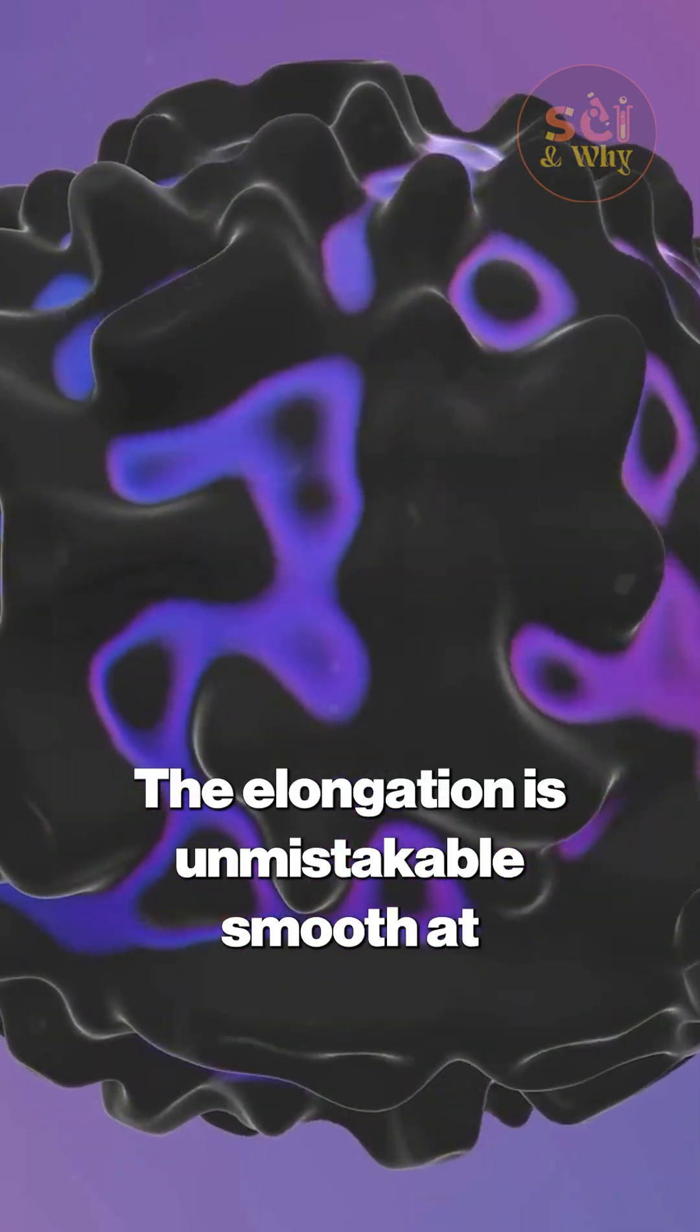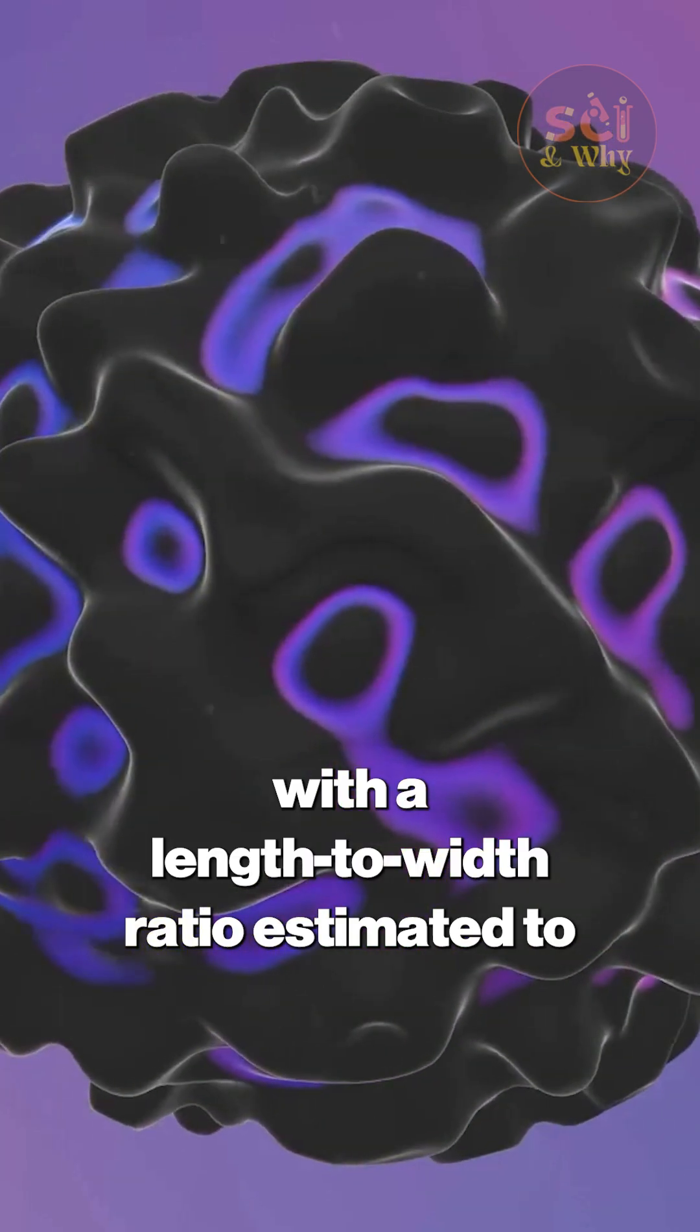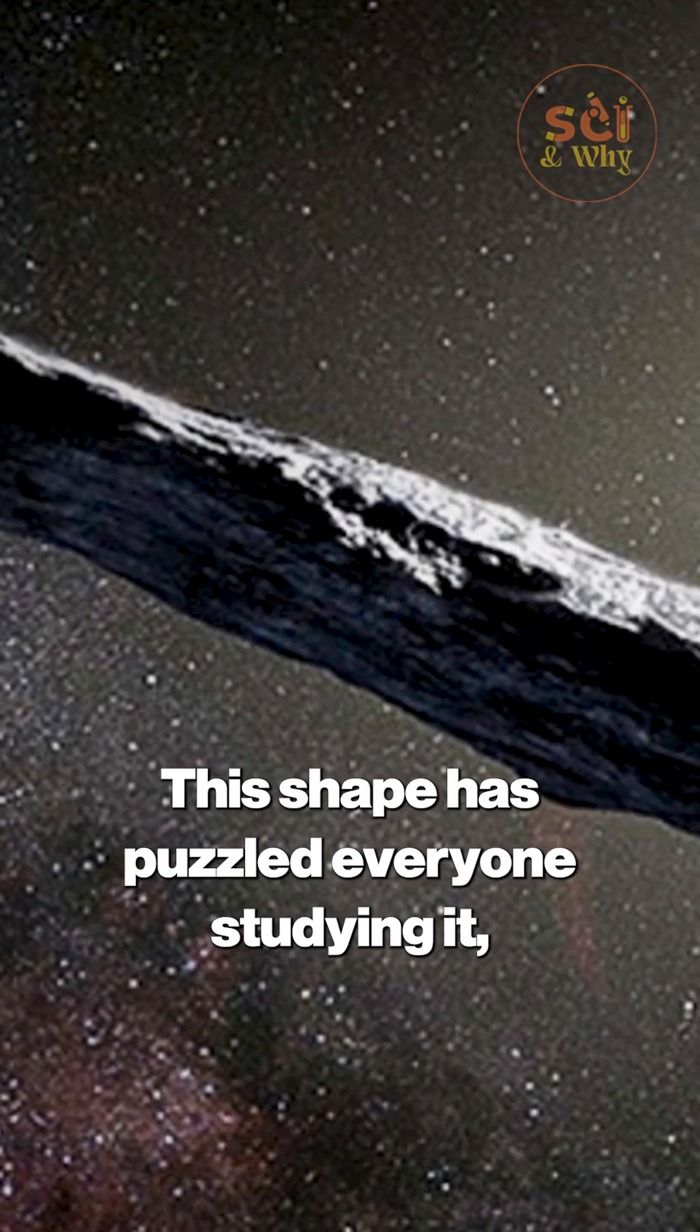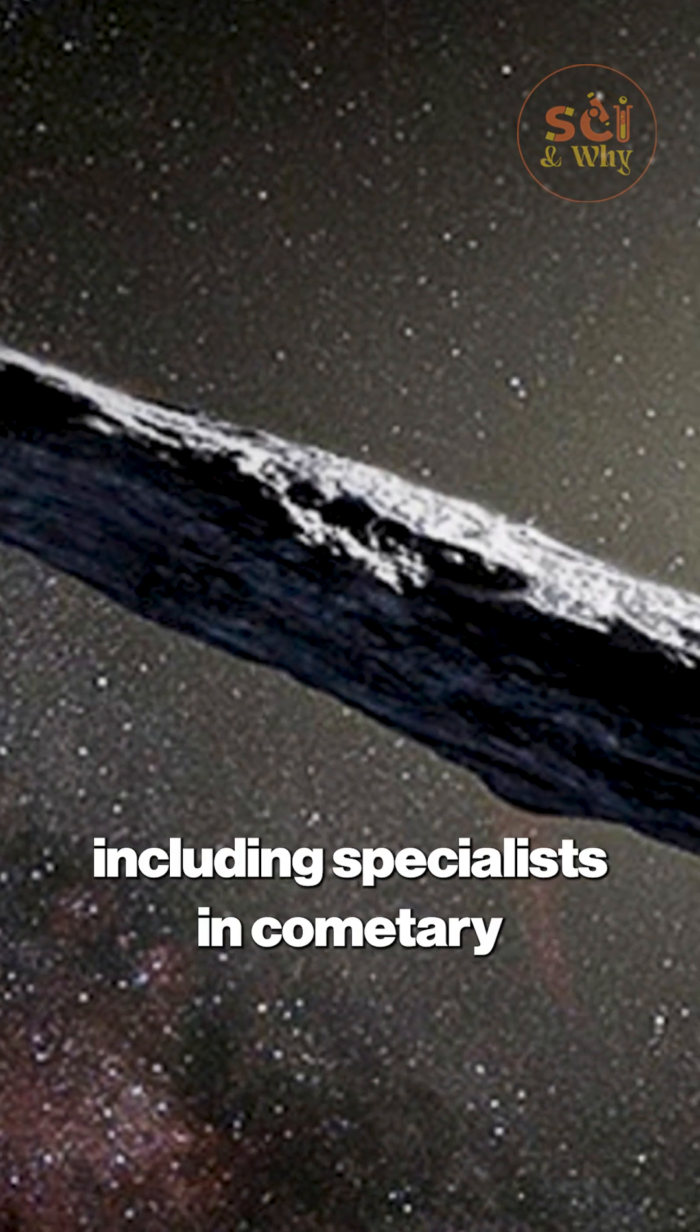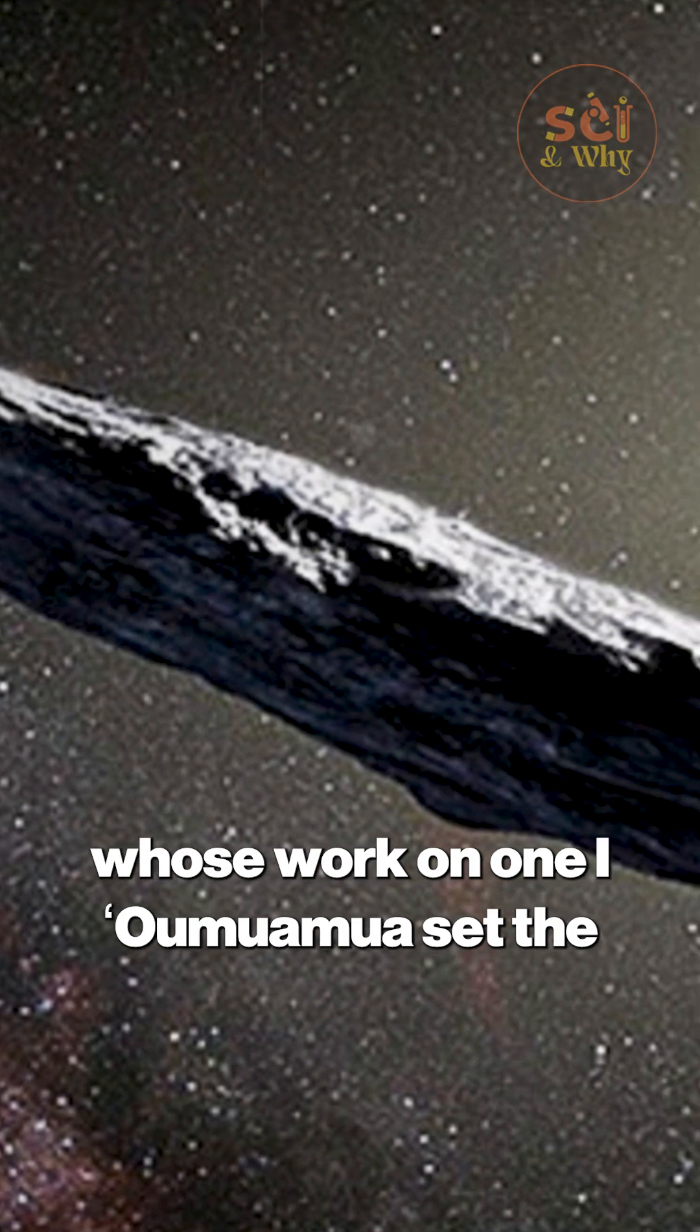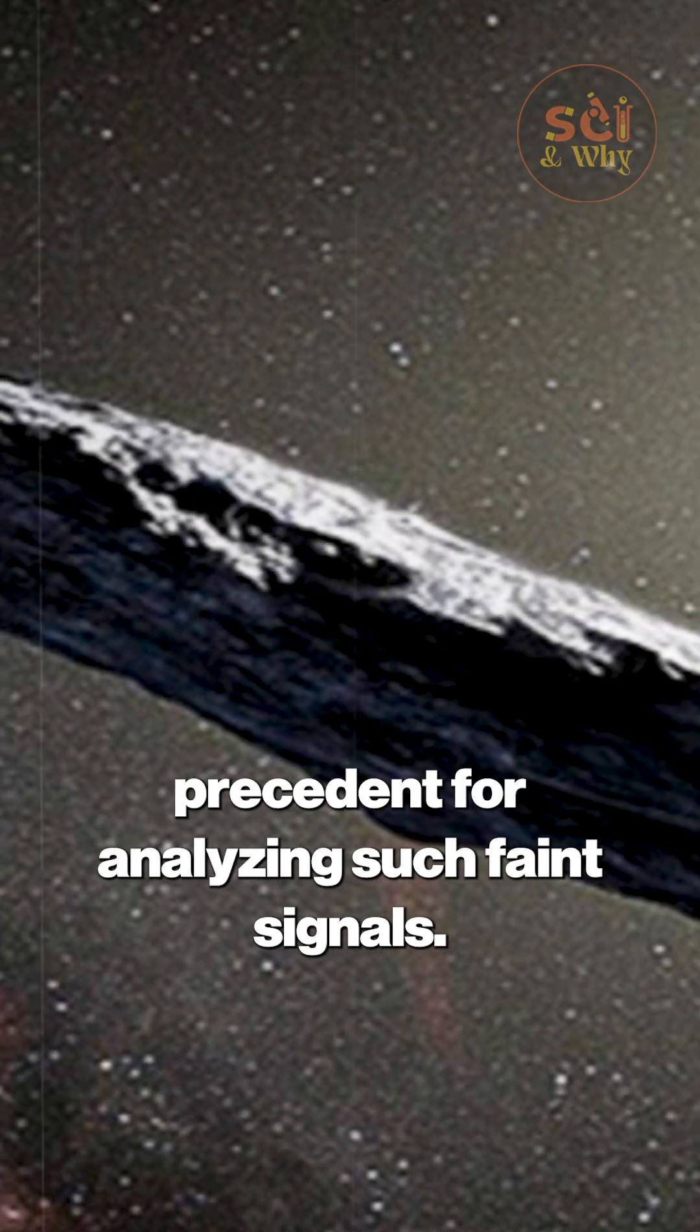The elongation is unmistakable, smooth at one end, uneven at the other, with a length to width ratio estimated to be at least three to one. This shape has puzzled everyone studying it, including specialists in cometary structure like Karen Meech, whose work on 1i Oumuamua set the precedent for analyzing such faint signals.